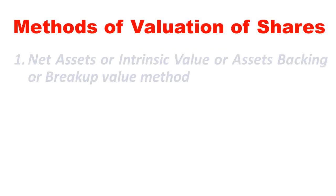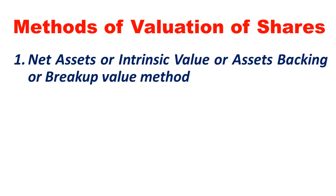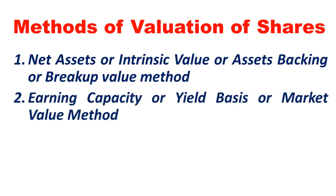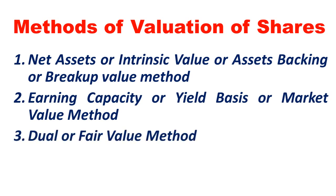Next are the methods of valuation of shares. Basically, we have two methods. One is the net assets method, also known as intrinsic value, asset backing, or breakup value method — these are various names used for the same method. The second method is the earning capacity, yield basis, or market value method. The third method is the dual or fair value method, which is not individually a separate method — it is a combination of both. The price under the first method plus the earning capacity, divided by two, gives the dual value or fair value.